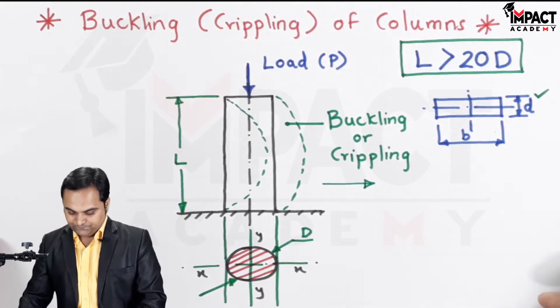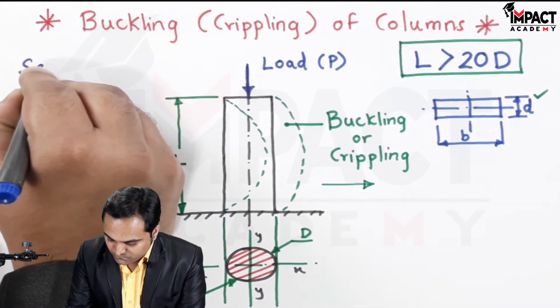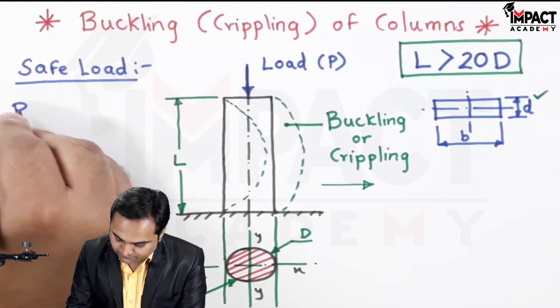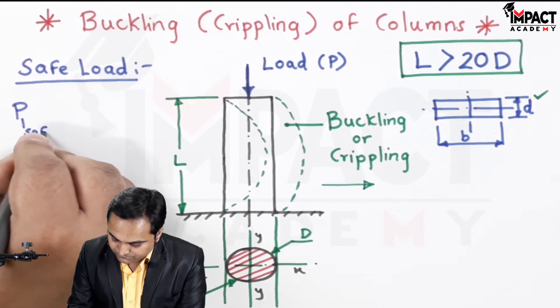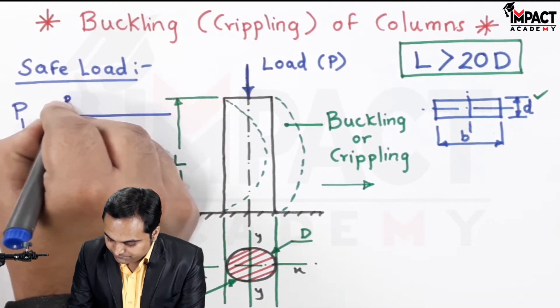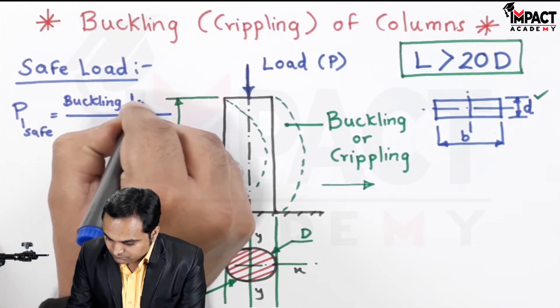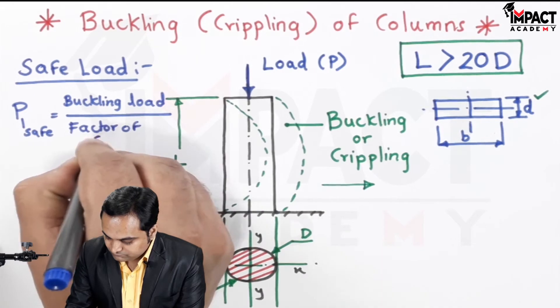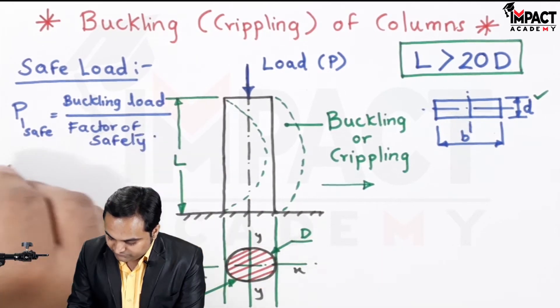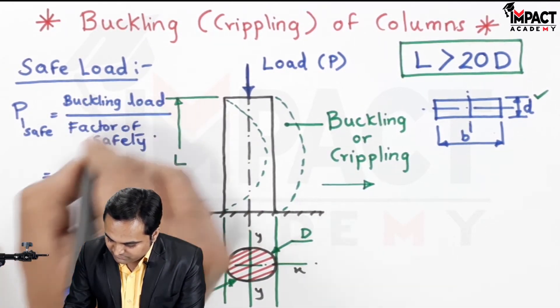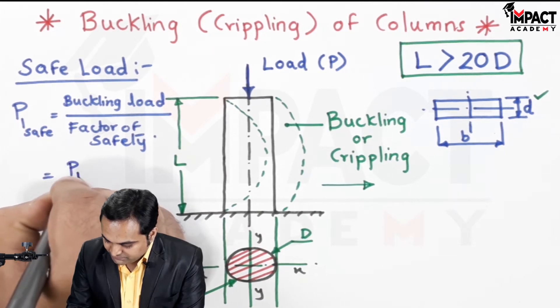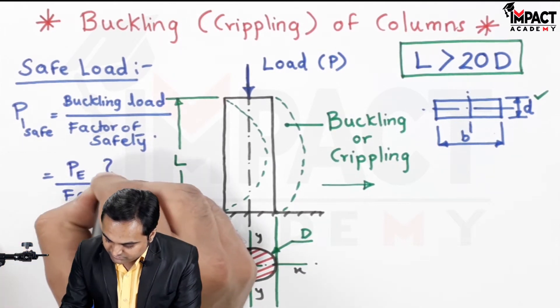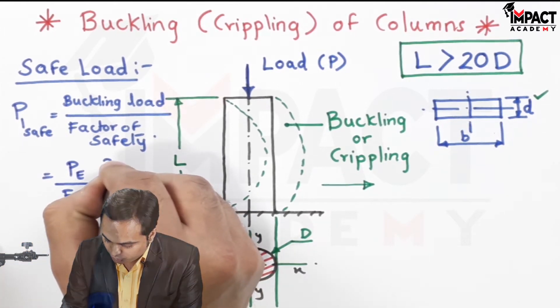So here I'll mention safe load: P_safe is the buckling load or we can say crippling load divided by factor of safety. And this buckling load, it may be Euler's load, which is P_e divided by factor of safety. Euler's load, this has to be used for long columns.